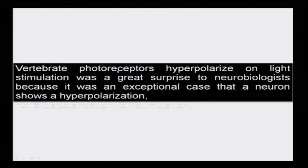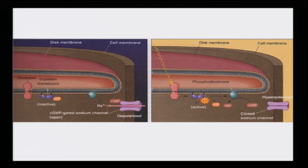Vertebrate photoreceptors hyperpolarize on light stimulation — this was of great surprise to neurobiologists, as it was an exceptional case where a neuron shows hyperpolarization rather than depolarization on stimulation. Note this down: hyperpolarization, not depolarization, on stimulation.